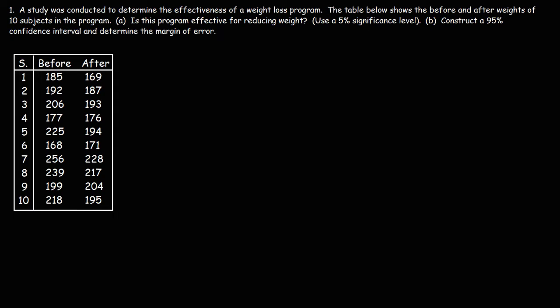The first thing we need to do is calculate the differences in the before and after values. Let's add a new column called xd. x sub d is the difference for each subject — it's going to be the after weight minus the before weight.